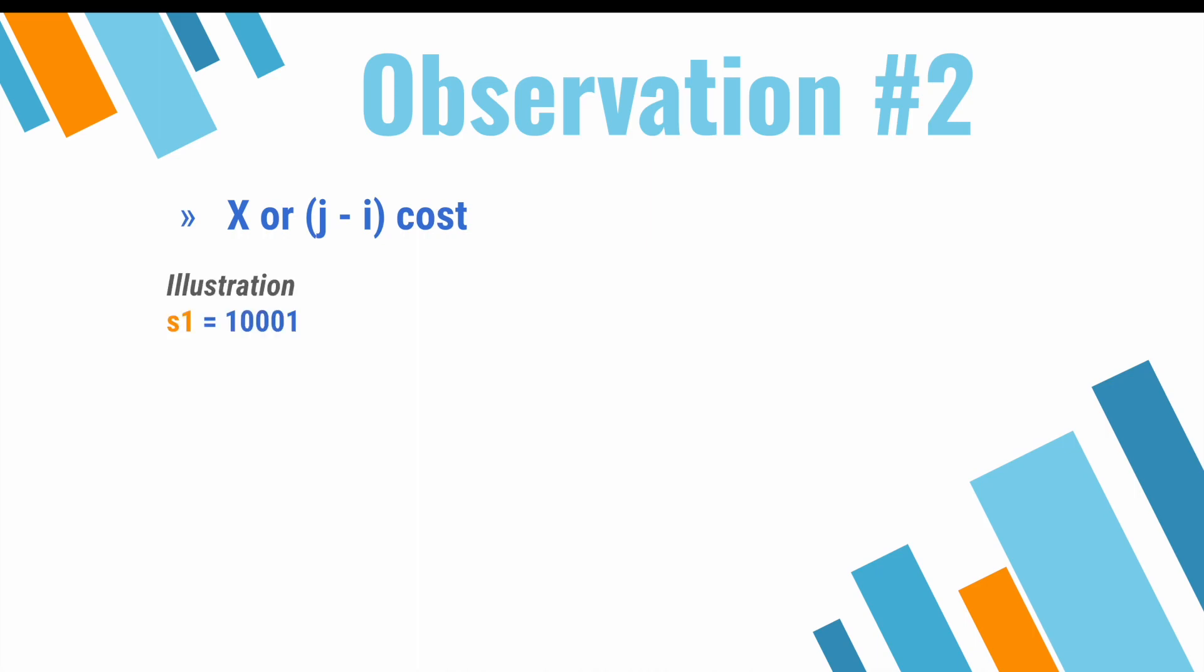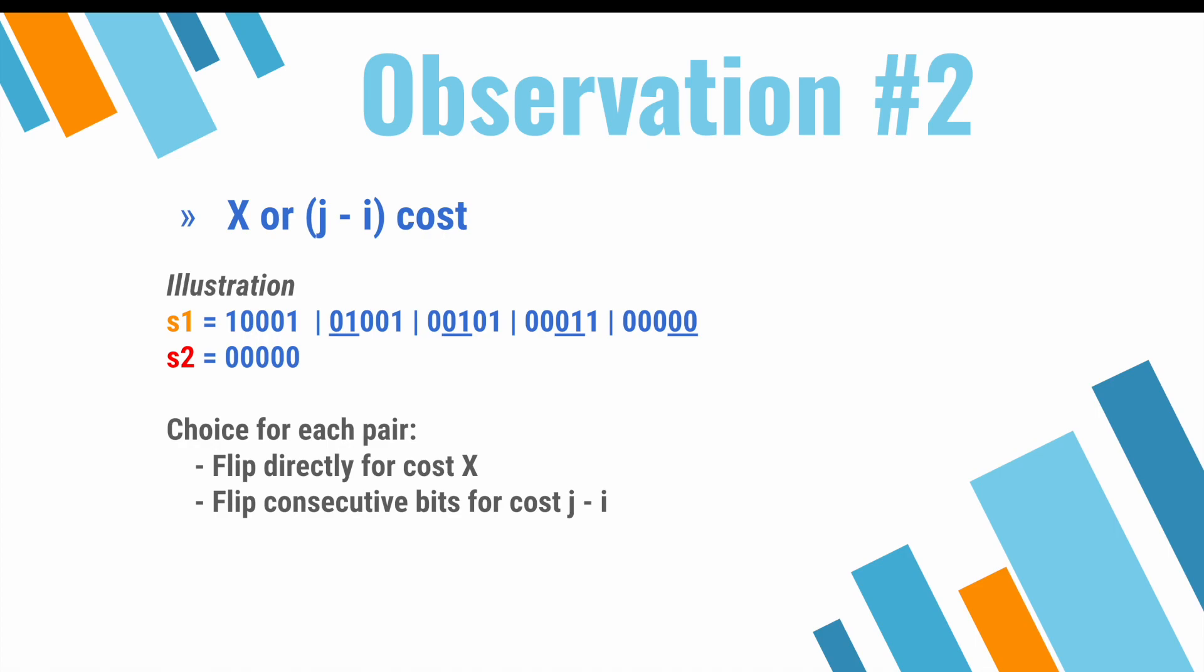Take this example. If we have s1 equals 10001 and s2 equal to all zeros, then we can flip the first two indices to get 01001, followed by a flip of the second two indices to get 00101, followed by a flip of the third pair of indices, and then finally a flip of the final pair of indices. This gives us a total of j minus i equals 4 minus 0 equals 4.